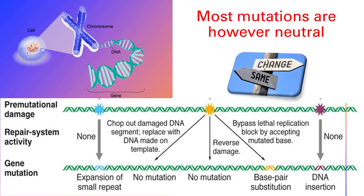Interestingly, whilst cellular systems including the repair system activities help to reduce the impact of new variants, the majority of new variants within the 1.5% of our genomic coding regions may not result in a change in amino acid variants, which in turn may not affect function. These mutations are largely neutral due to the redundancy of our codon system.